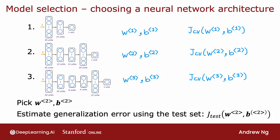You compute this for all three models, then pick the model with the lowest cross-validation error. So if in this example the second neural network has the lowest cross-validation error, you would pick that model and use the parameters trained on it. Finally, you use the test set to estimate how well your chosen neural network will generalize.